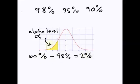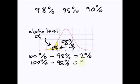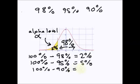What this means is the entire area under the curve is 100%. This white area is 98% and this little yellow area here is 2%. A confidence level of 95% has an alpha level of 5%, and a confidence level of 90% has an alpha level of 10%.